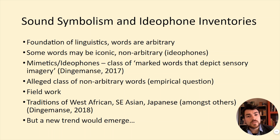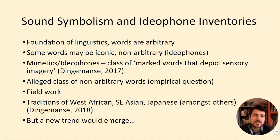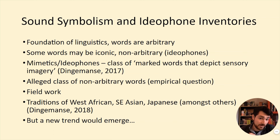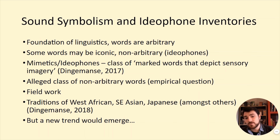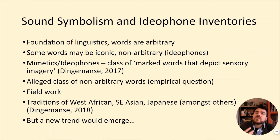So what does iconic mean? It means there's some motivated relationship that isn't just systematic. For instance, in Japanese, 'doki doki' means a kind of nervous but excited feeling — positive anticipation mixed with some anxiety. That is said to be the case because doki doki imitates the heartbeat, and your heart beats in a particular way when you feel it. This is an example of a mimetic or an idiophone — depending on tradition. In Japanese, they're often called mimetics.